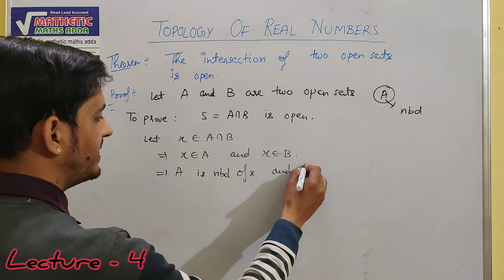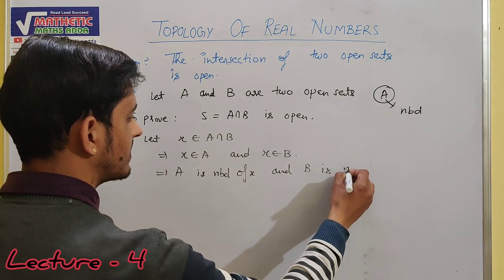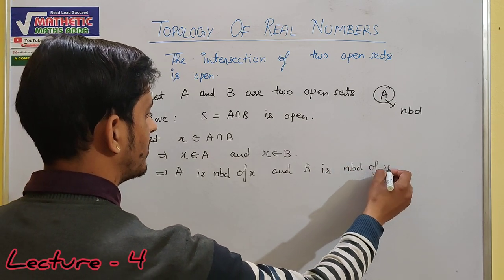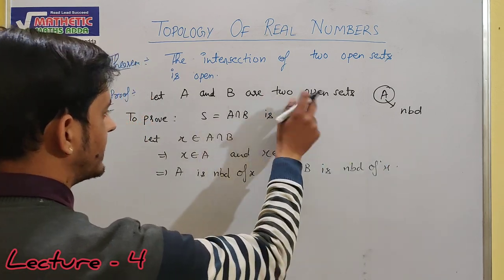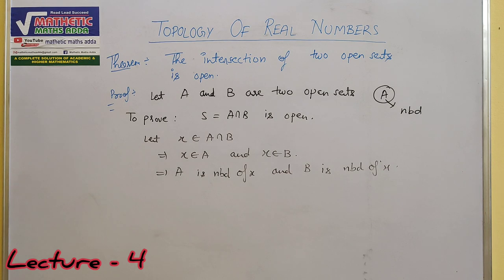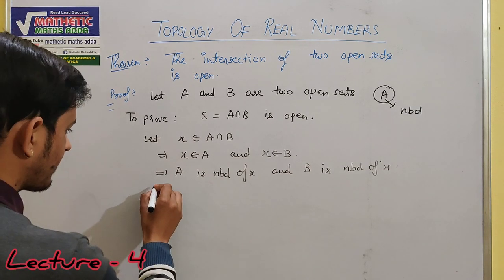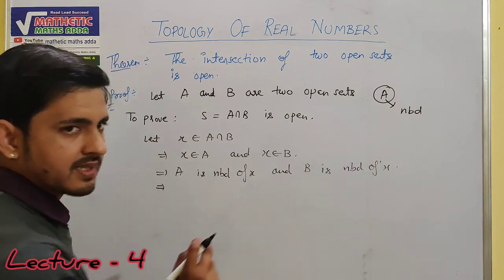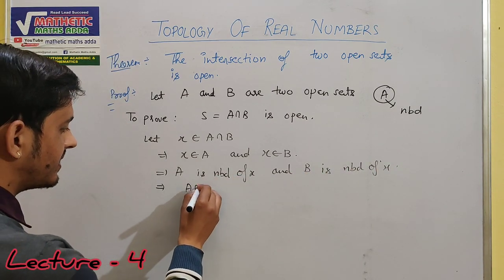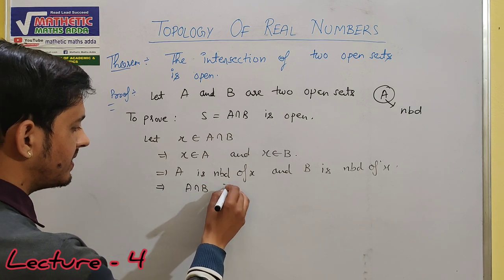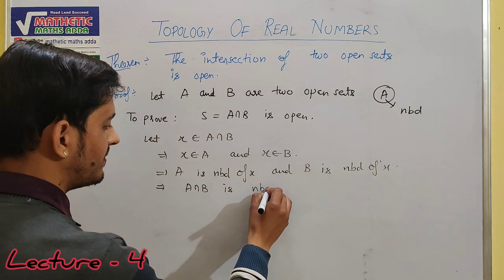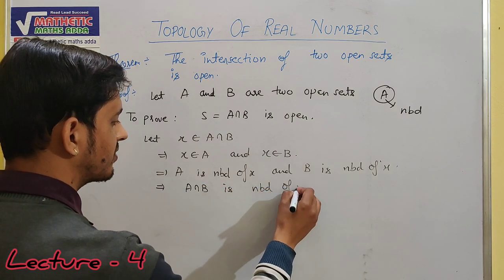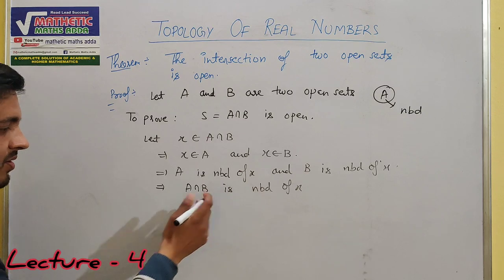और B भी neighborhood of x हो जाएगा। क्यों? क्योंकि दोनों open sets हैं, और open sets अपने हर एक point के neighborhood होते हैं। अब अगर A, x का neighborhood है और B भी x का neighborhood है, तो इसका मतलब A intersection B भी neighborhood of x हो जाएगा — क्योंकि दोनों neighborhood हैं तो उनका intersection भी neighborhood होगा।